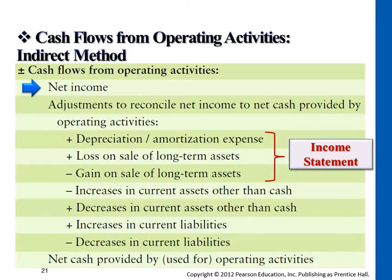The idea of loss on sale of long-term assets — we're adding it back as well. Earlier it was subtracted from net income. We're adding it back just because later on the cash will be representing it under investing activities. So we're adding back any loss and subtracting any gain on sale of a plant asset. Those two are handled this way because later they will be represented in the second section.